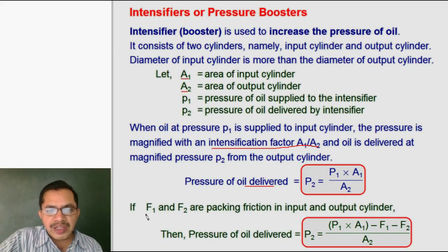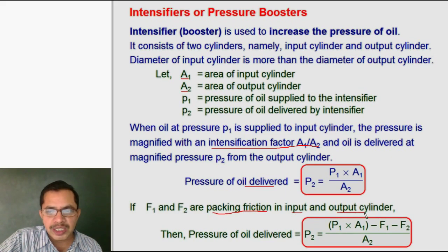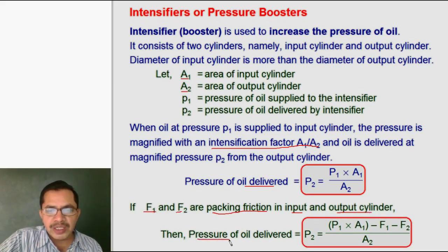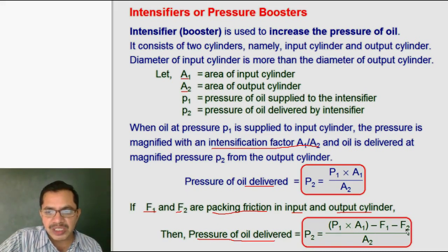If we consider the packing frictions in the input cylinder and output cylinder as F1 and F2, then the pressure of oil delivered will be P2 equals P1 multiplied by A1, minus the packing frictions, divided by A2.